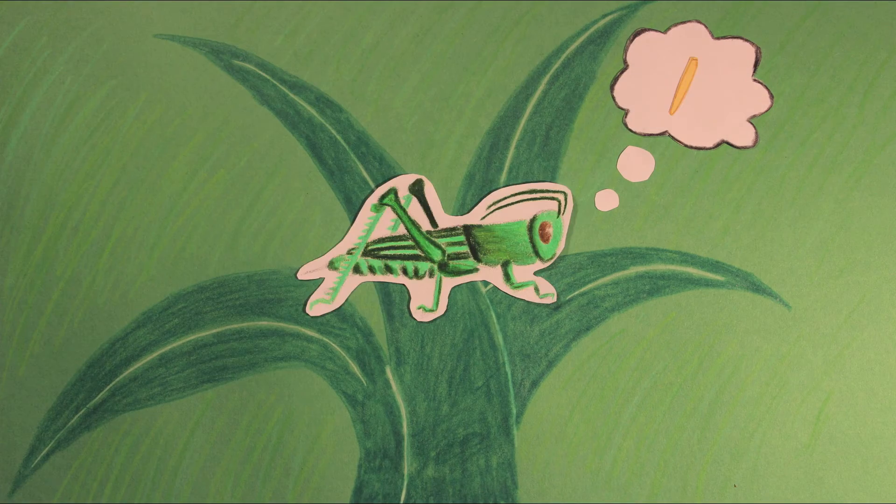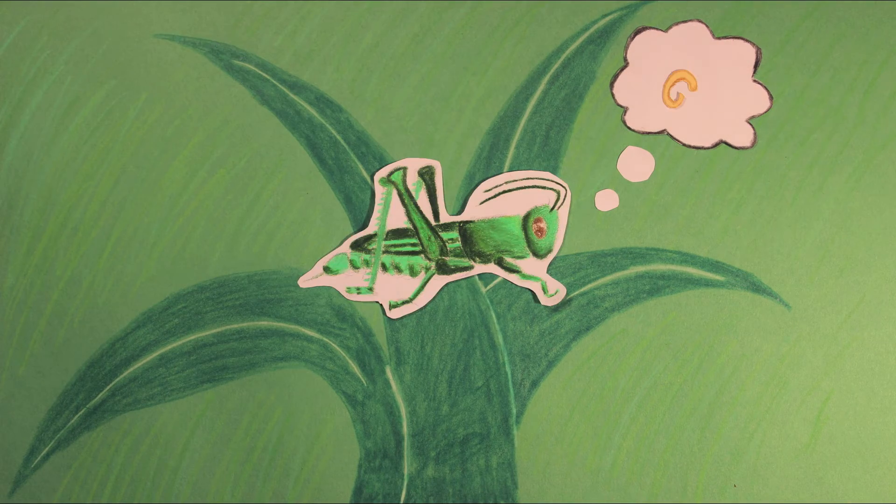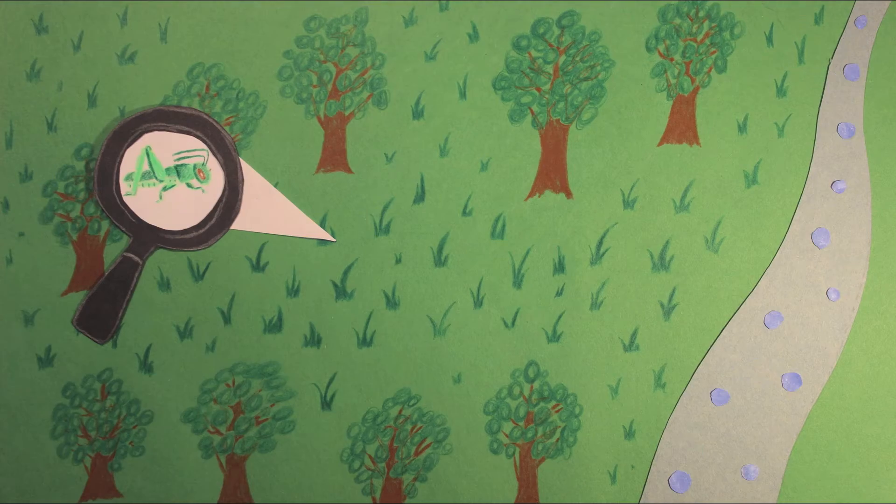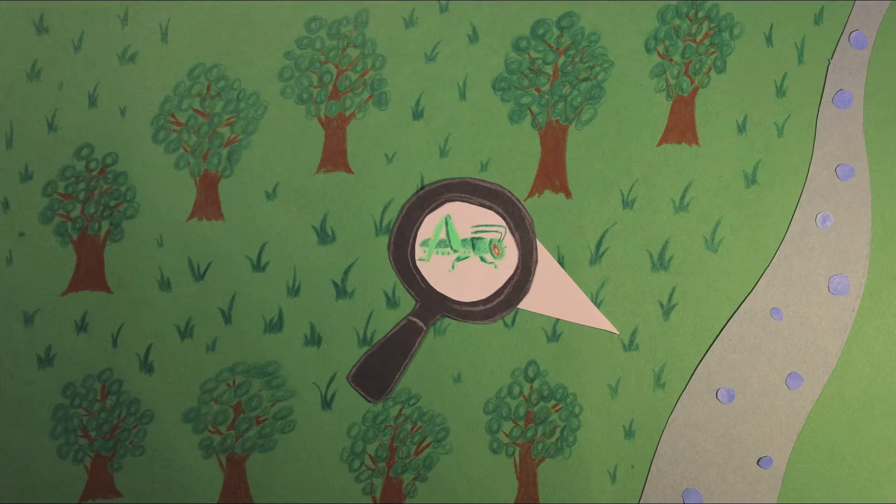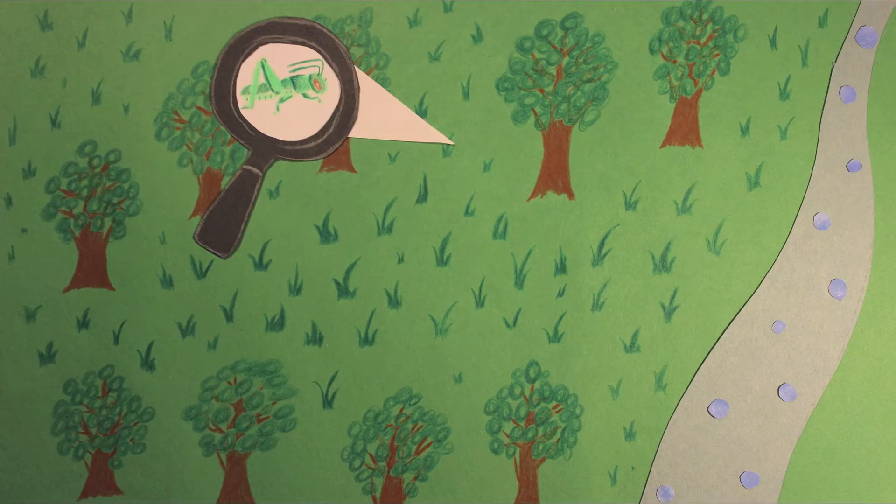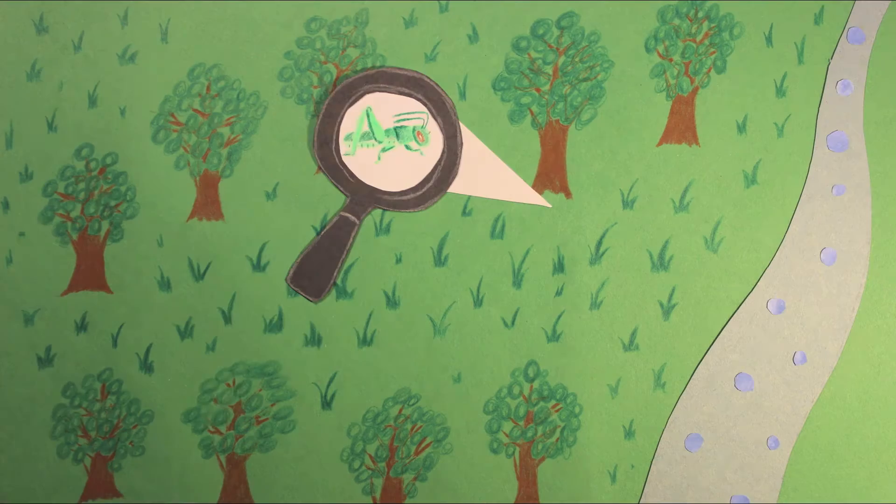First, the hairworm will send signals to the cricket's brain to make it act erratically, making it move around in a random fashion. Crickets in this stage will frequently be found in atypical locations and will often end up near water.